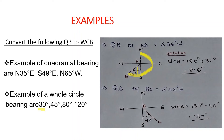Example two: we have a Quadrantal Bearing of South East 43 degrees. We draw our line to the southeast, and from the south pole we measure 43 degrees. Now we want to find the Whole Circle Bearing — that is from the north pole clockwise up to this line. It will be 180 degrees from north to south, minus the 43 degrees, giving us a Whole Circle Bearing of 137 degrees.